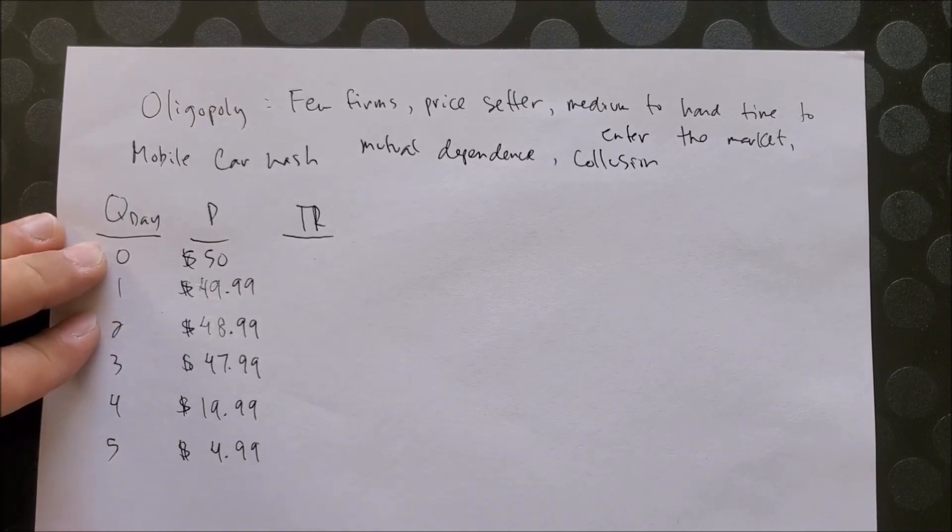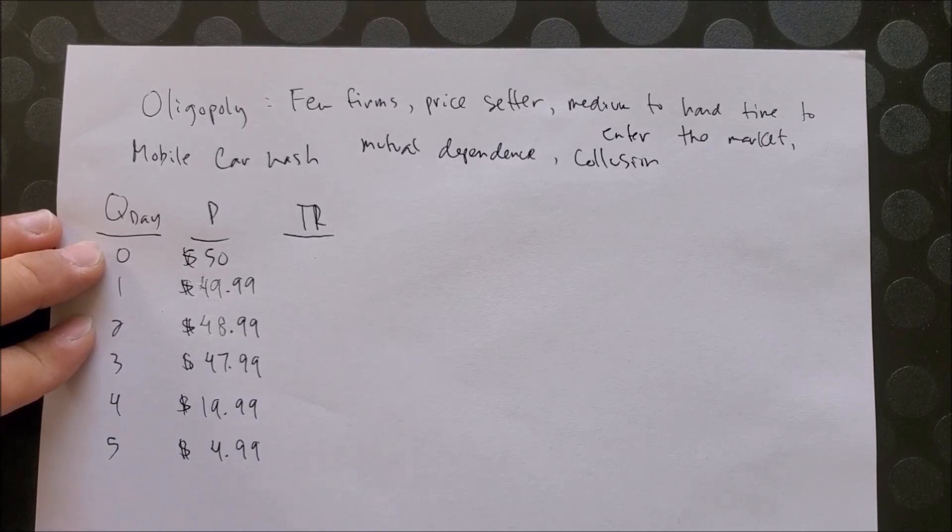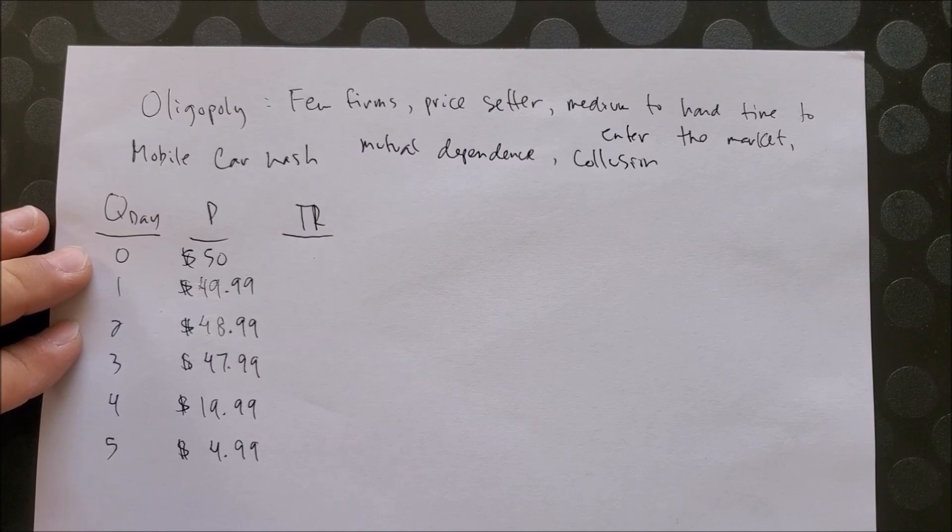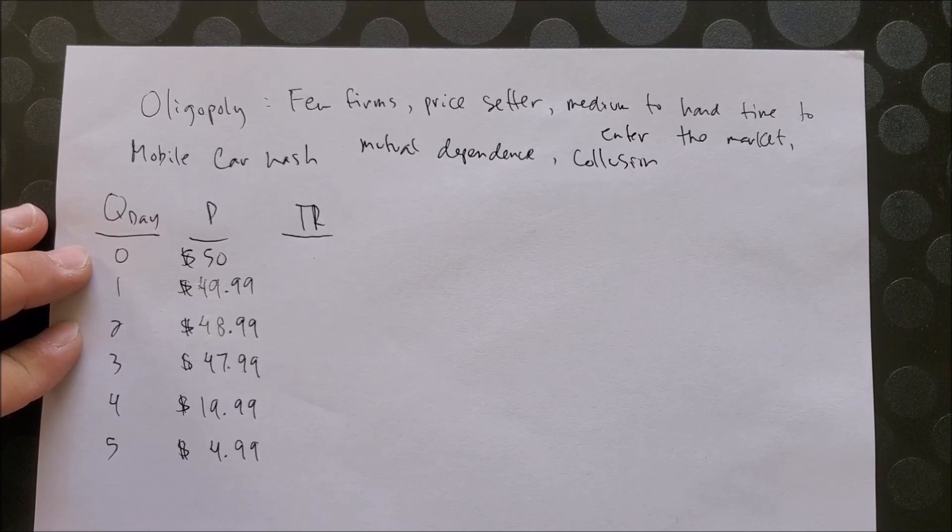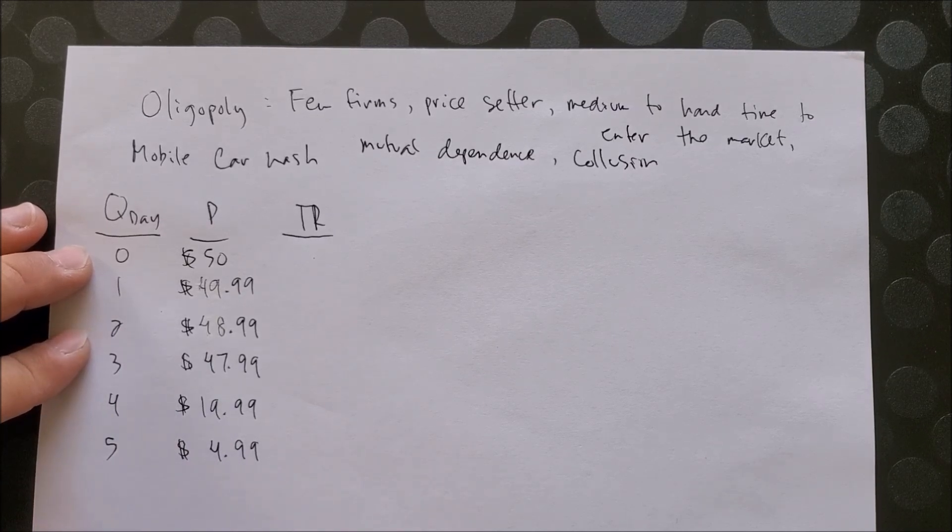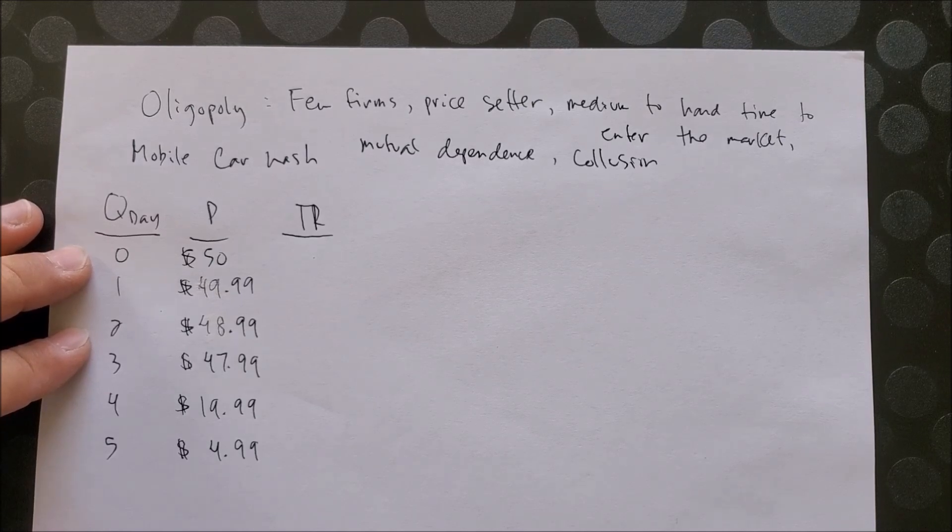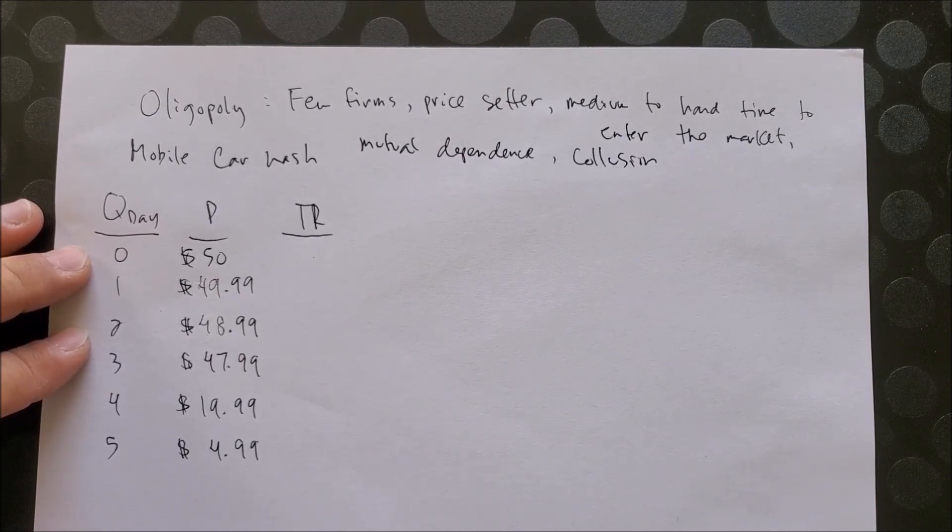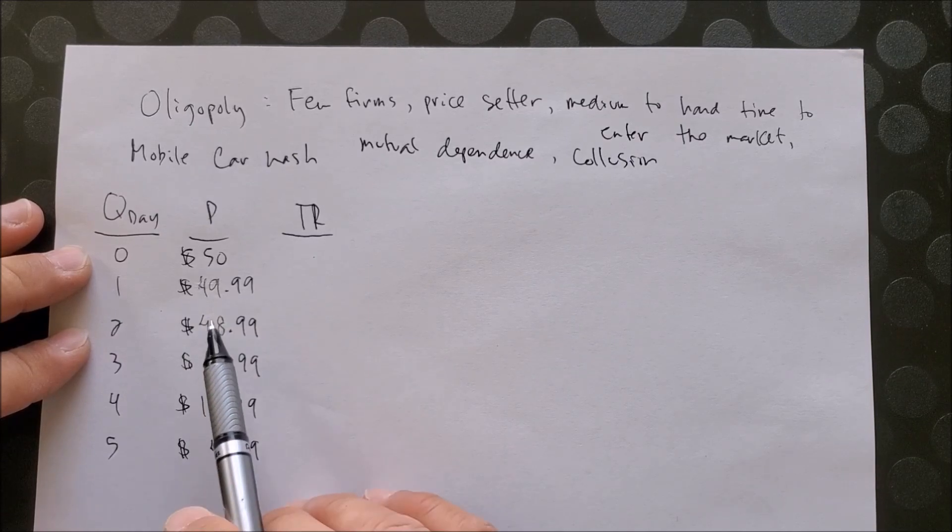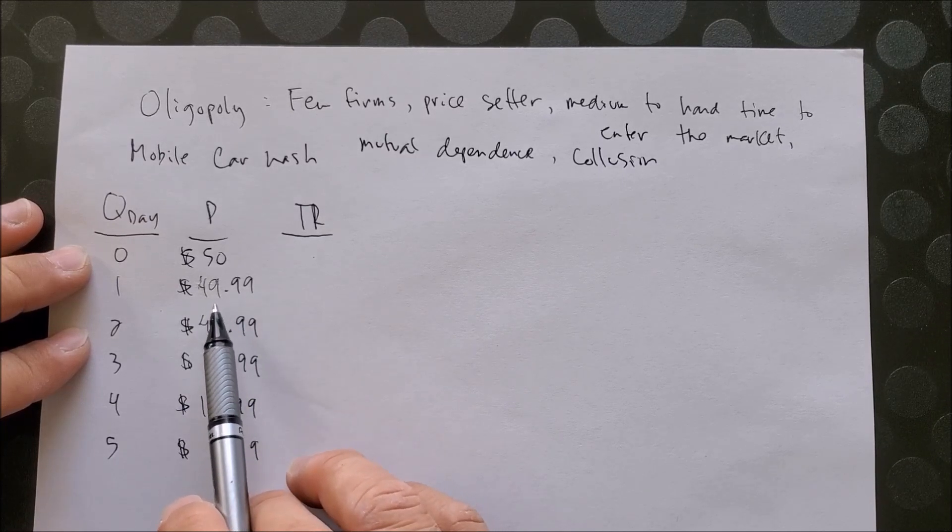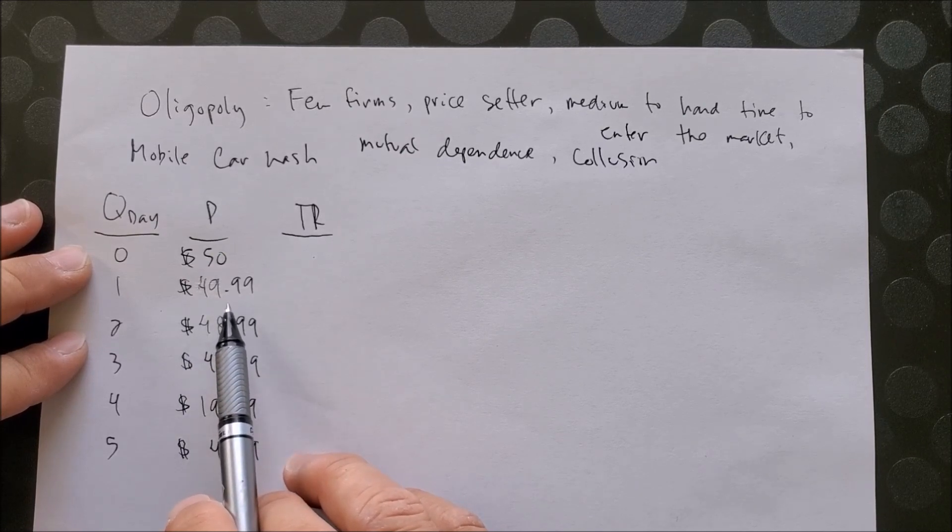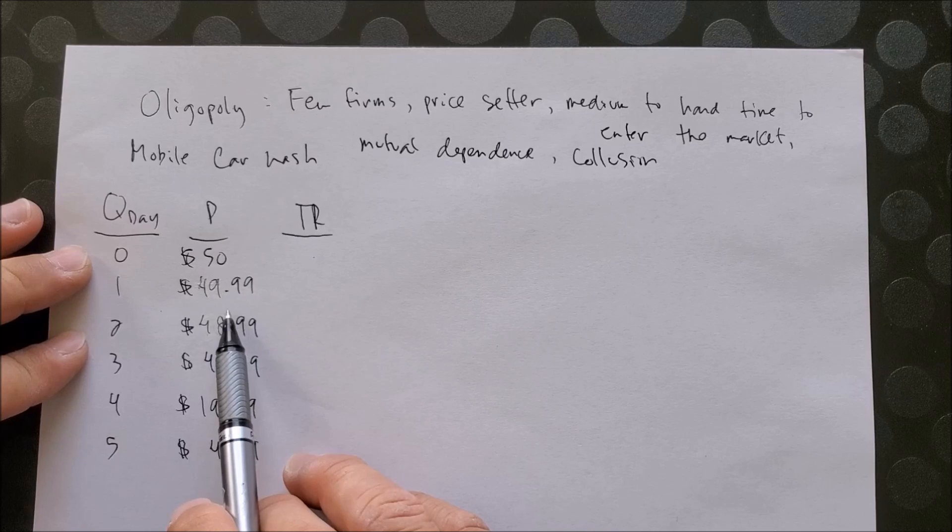What I'm using here is the same exact numbers for the cost in the previous examples, but now you can see how we have price at a different set. What I'm trying to show you is you may have two or three companies that also deal with mobile car washing like yours. Let's say the other owners have called you and said, 'Hey, let's keep the price somewhat at bay. Let's not decrease price too much. I will agree to sell my services for $49.99 if you do the same.' And you would then agree, so now we're seeing collusion take place.